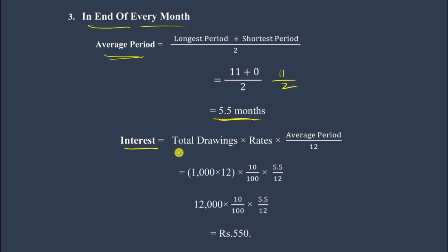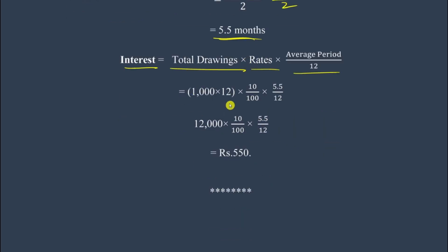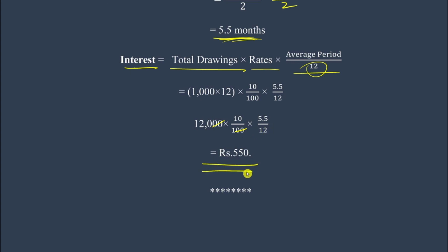Again the main formula: Interest = Total Drawings × Rate × Average Period / 12. Total drawings = 1,000 × 12 = 18,000. Rate = 10/100. Average period = 5.5 months. So: 18,000 × 10/100 × 5.5/12. Cancelling: 110 × 5.5 / 12 = 550 rupees. So the interest for drawings at the end of every month is 550 rupees.